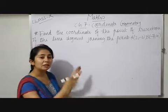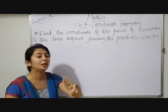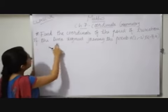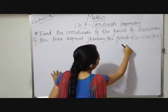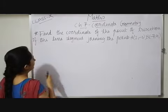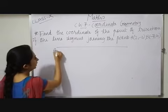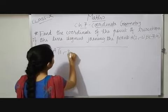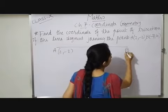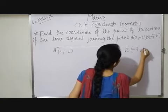Trisection means dividing into three equal parts of the line segment joining points A and B. So let me draw first of all here a diagram. Let this one be my point A (2, -2) and this end point be my B (-7, 4).